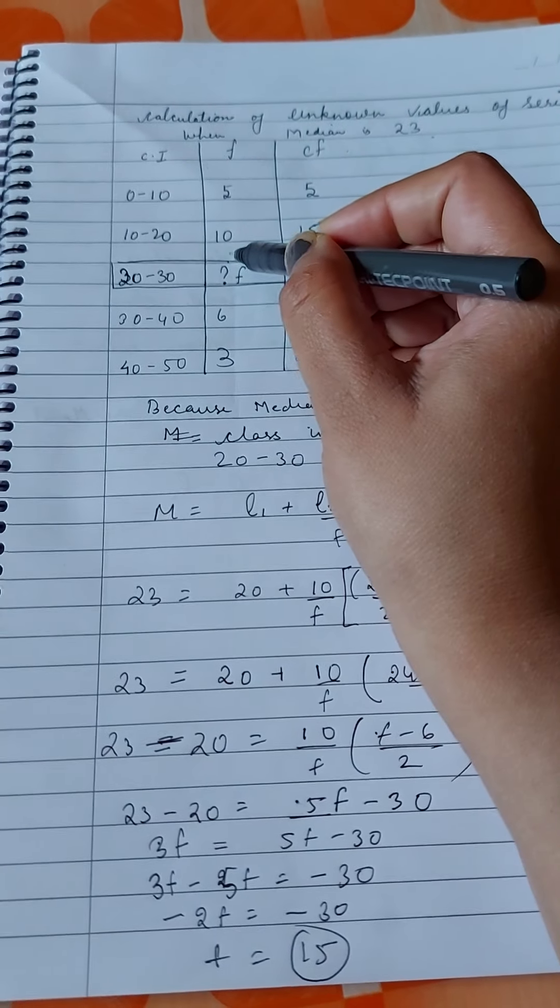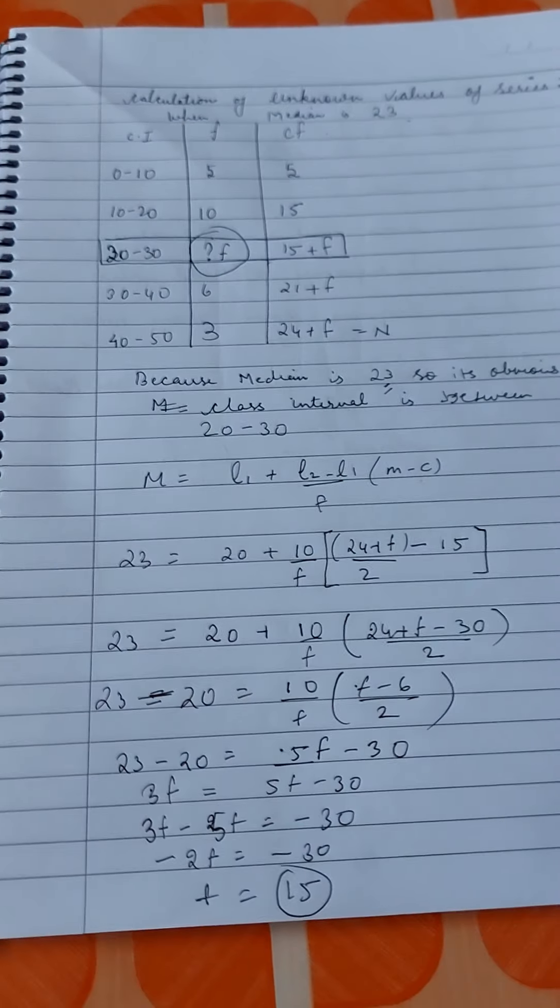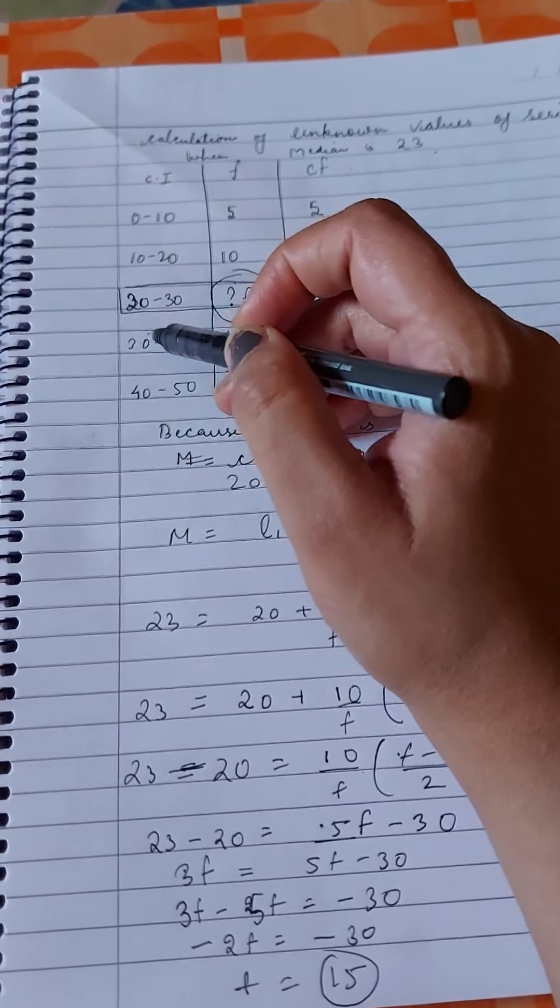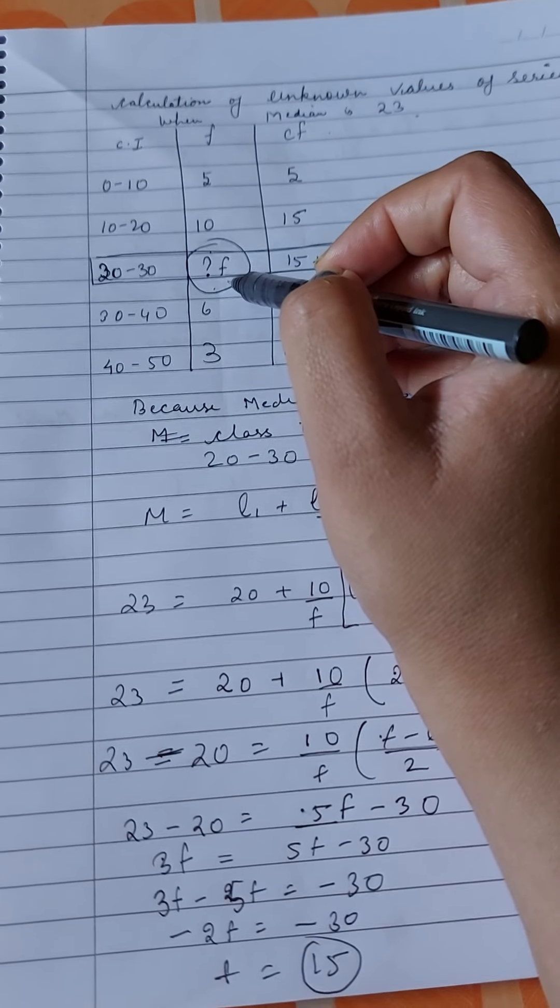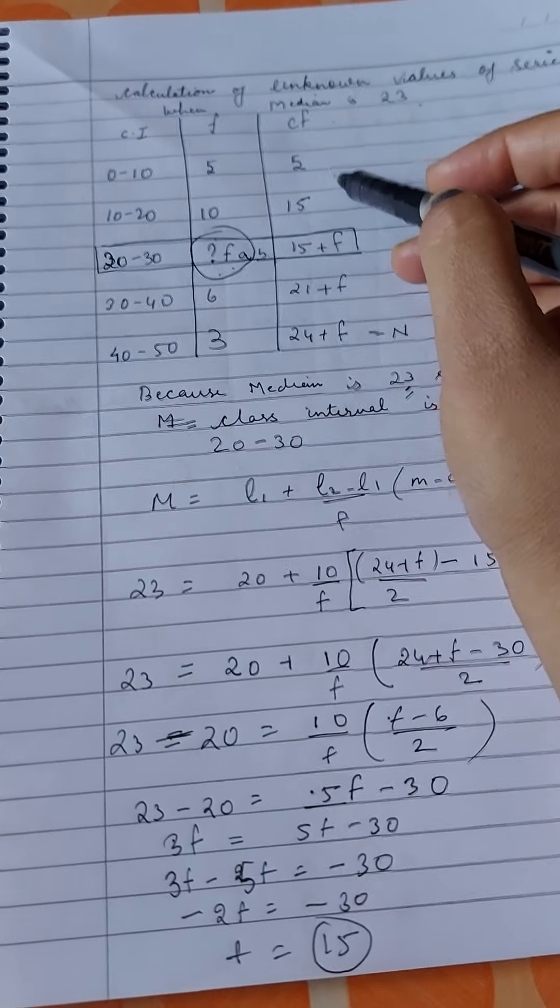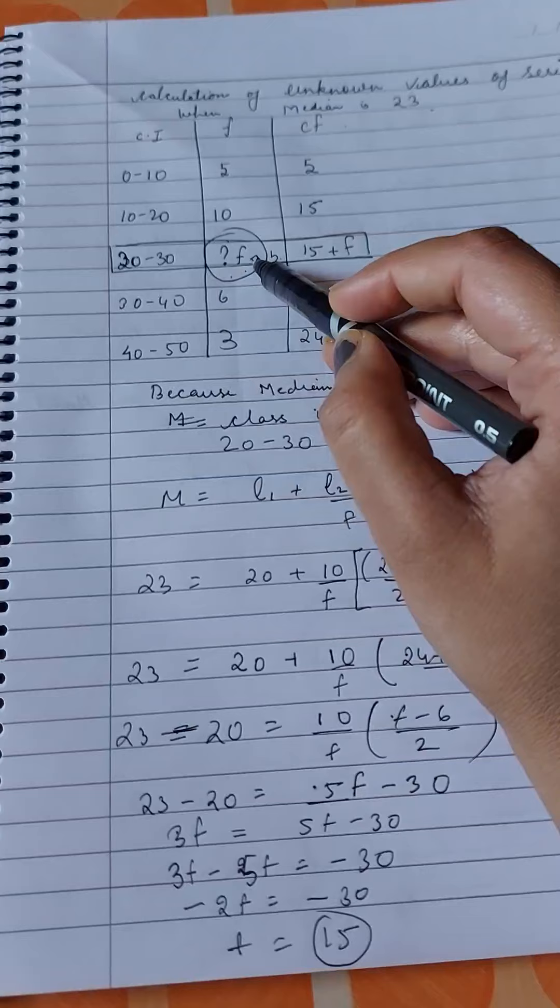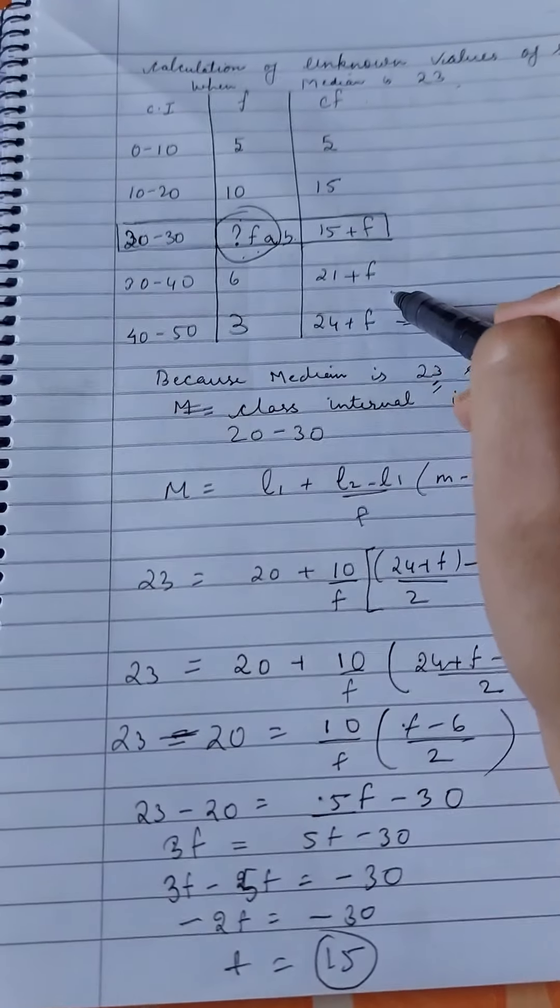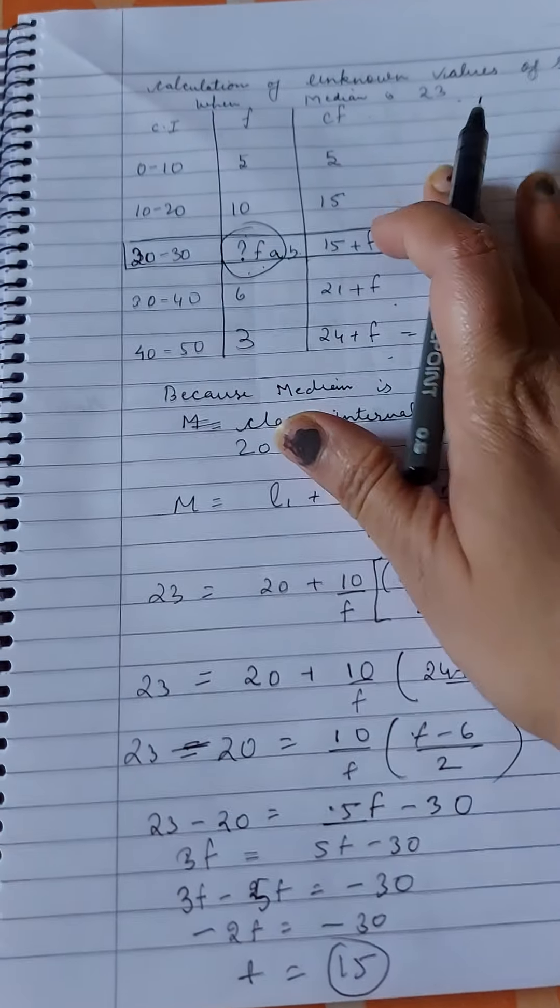There is a number, f, where a question mark is placed. We have to find this number. The question is given like this: 0 to 10, 10 to 20, 20 to 30, 30 to 40, 40 to 50. Frequency is given: 5, 10. Here there's a question mark, we wrote f (you can write A, B, anything), then 6, 3. Cumulative frequency we keep adding: 5, after 5 we added 10, it became 15. In 15, we'll add the number f, so it's 15 plus f. In 15 plus f, we add 6, so it's 21 plus f. 21 plus 3 becomes 24 plus f. This is our calculation.